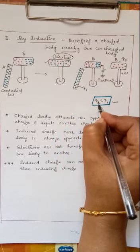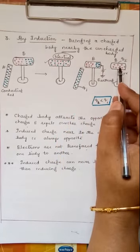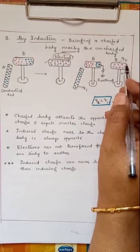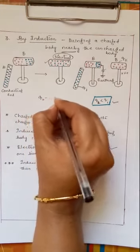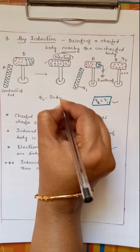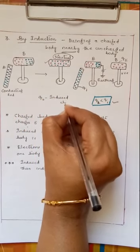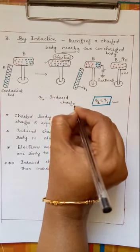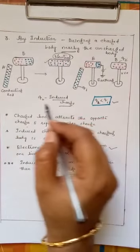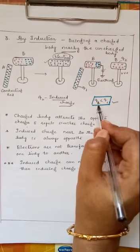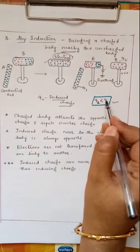So q2 is known as what? q2 is known as here induced charge. So remember this point, we use in many topics later. So this induced charge q2 is always smaller than the charge on the charging body.